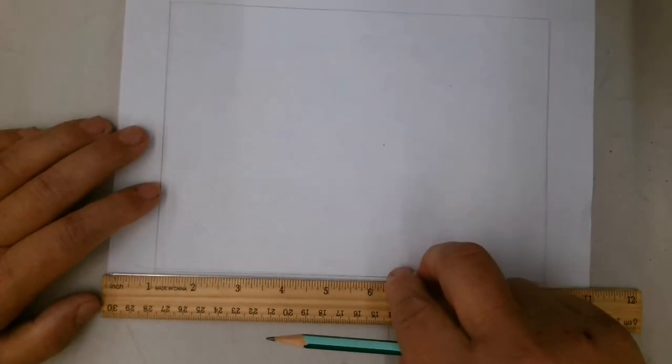After that's done, you're going to take your sketch paper, the same paper you do your sketches on or a different paper, and you're going to use the ruler and draw a line.